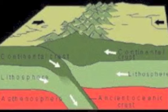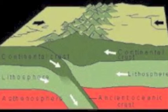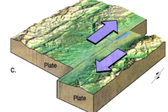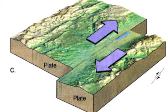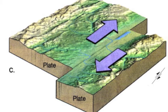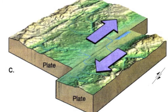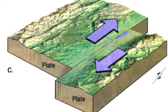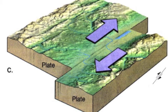Transformation boundaries are places where plates slide past each other. This happens in the Appalachian Mountains. Since the plates on either side of the transformation boundary are merely sliding past each other and not tearing or crunching each other, transformation boundaries lack the spectacular features found at convergent and divergent boundaries.